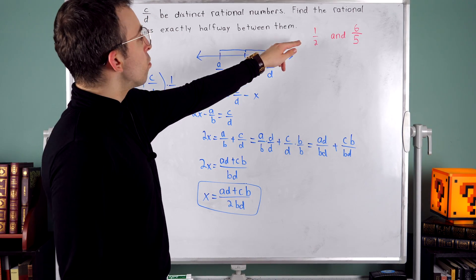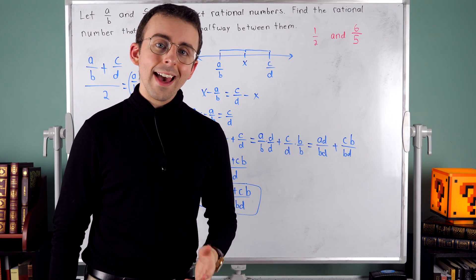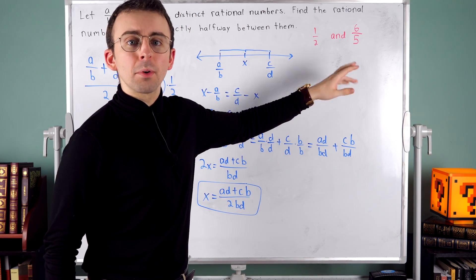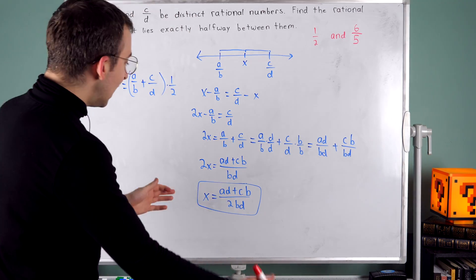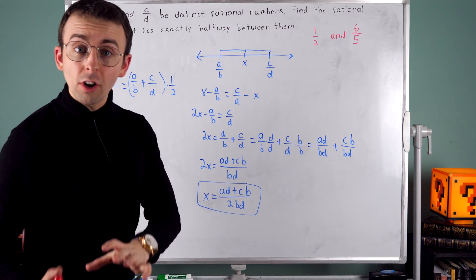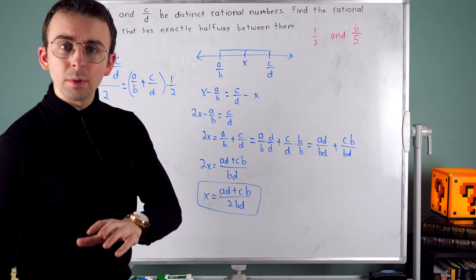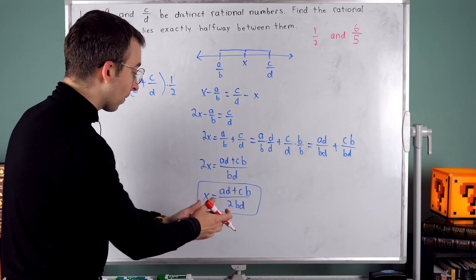Say I've got the two rational numbers, one half and six fifths. I don't know offhand what number's halfway between those. Let's use the formula that we just proved to figure it out. The number halfway between those should be, well, let's make sure that we see what's going on here.